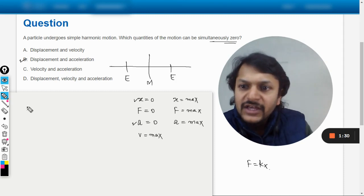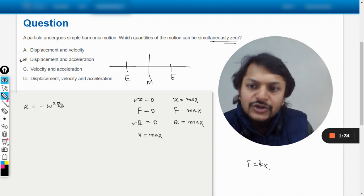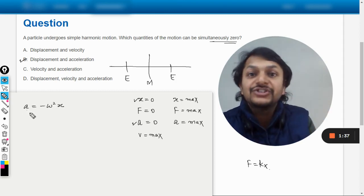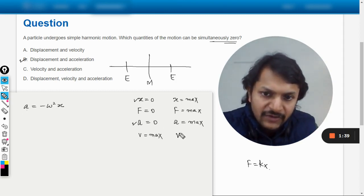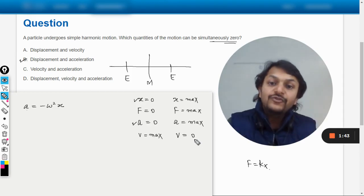But it is always negative. Acceleration is equal to minus omega squared X. So X is maximum, acceleration is maximum, but acceleration is in the opposite direction. And what is the velocity at the extreme position? Zero.